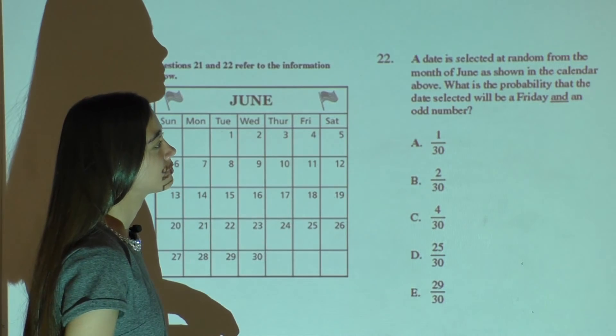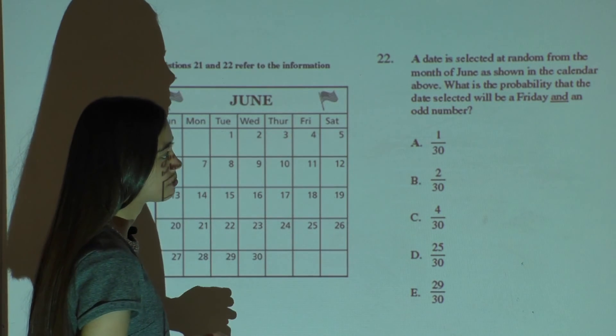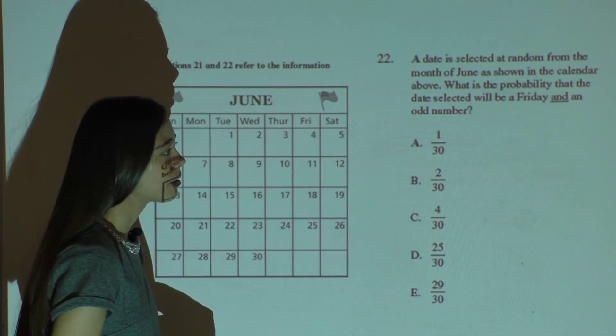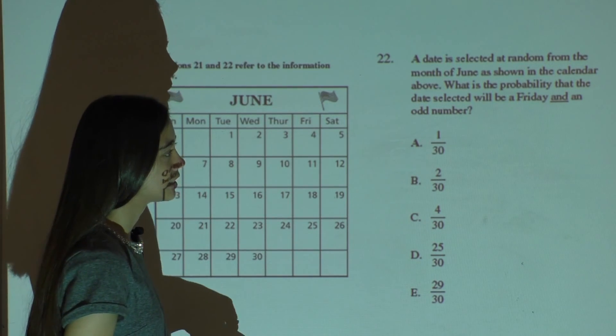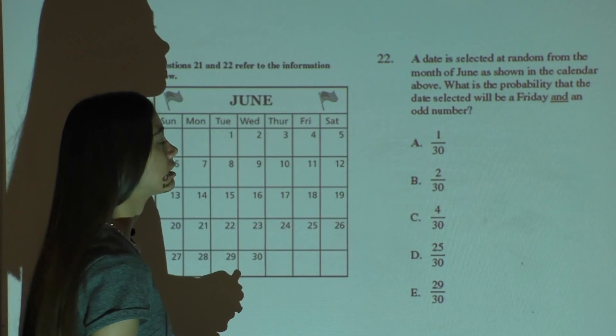A date is selected at random from the month of June as shown in the calendar above. What is the probability that the date selected will be a Friday and an odd number?